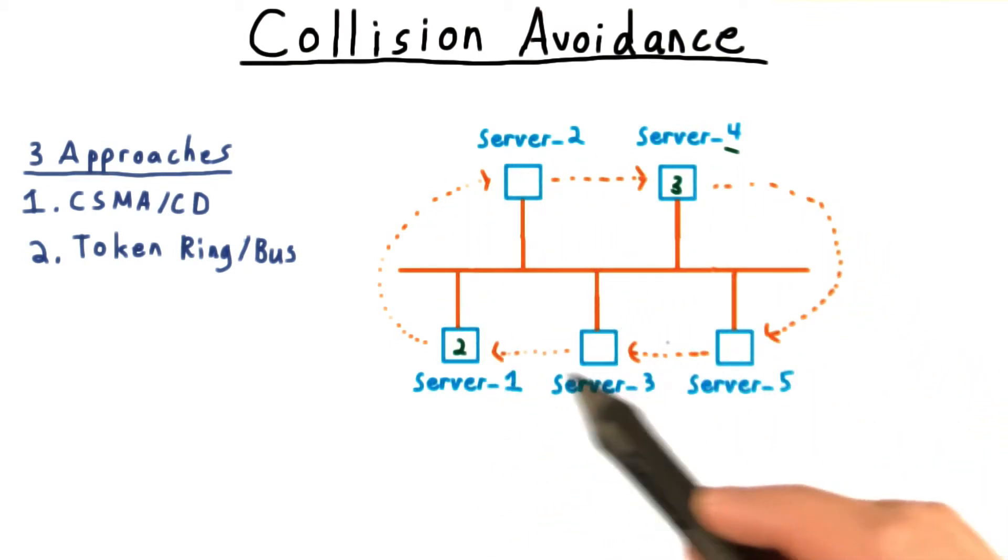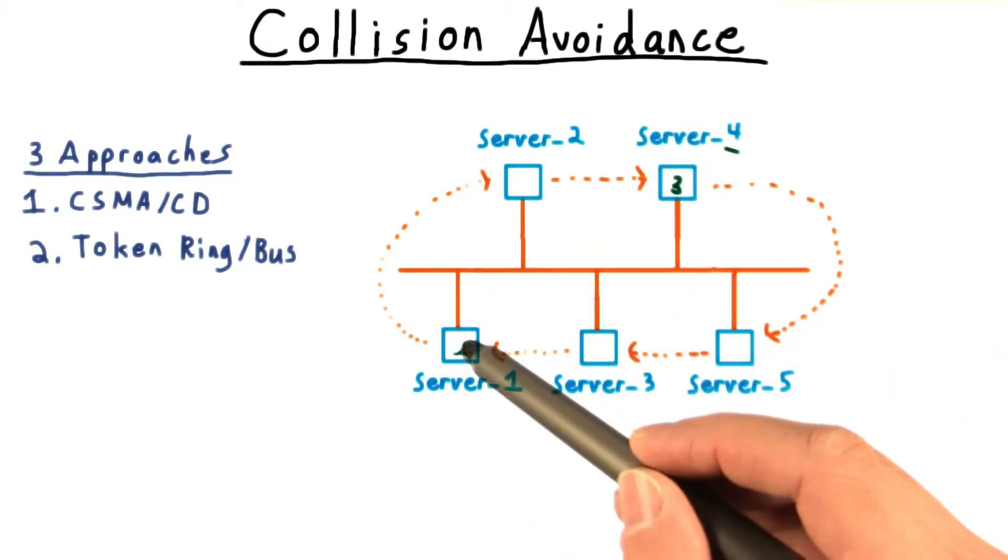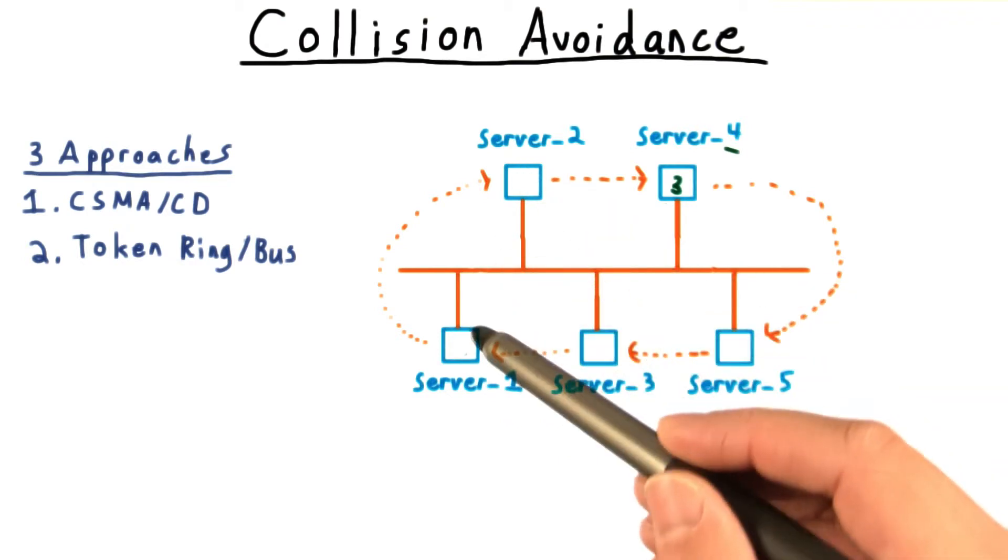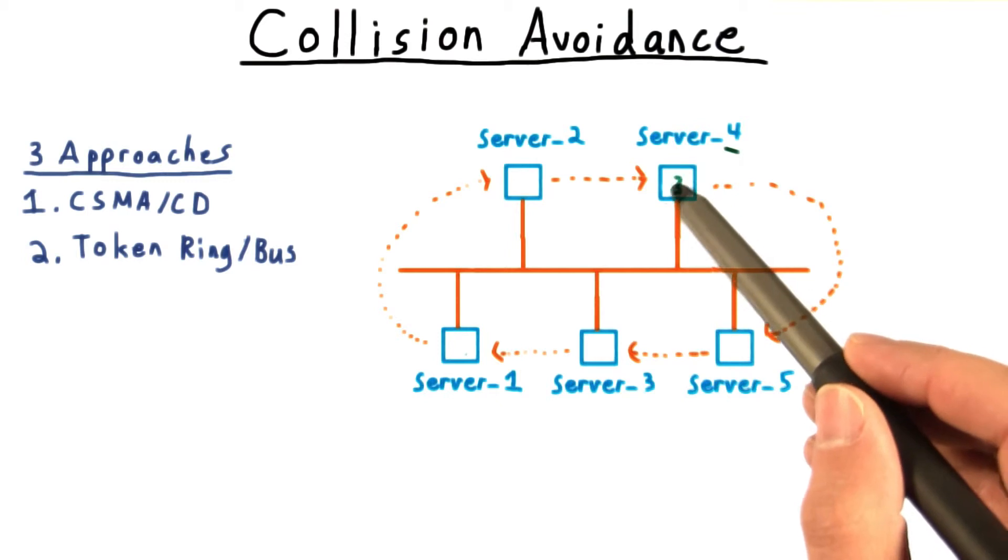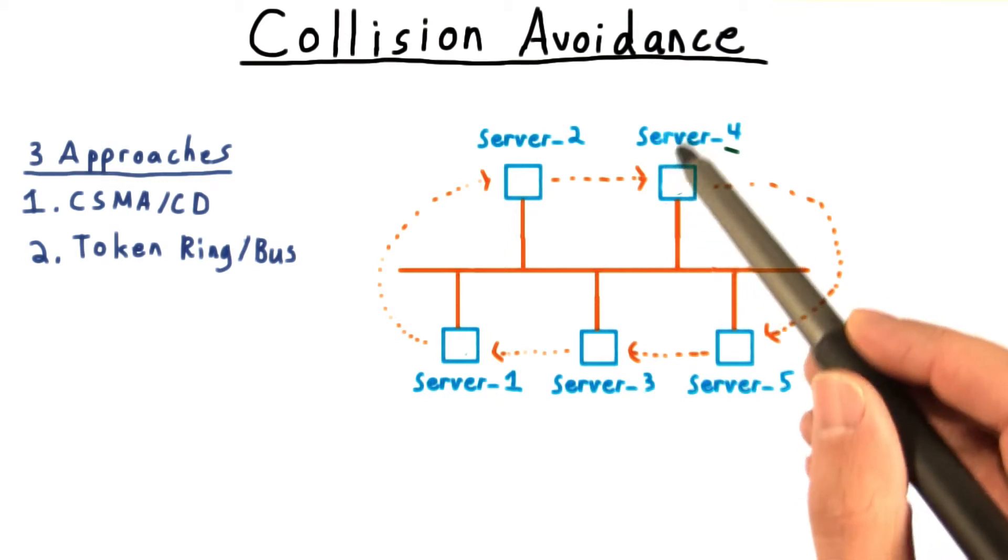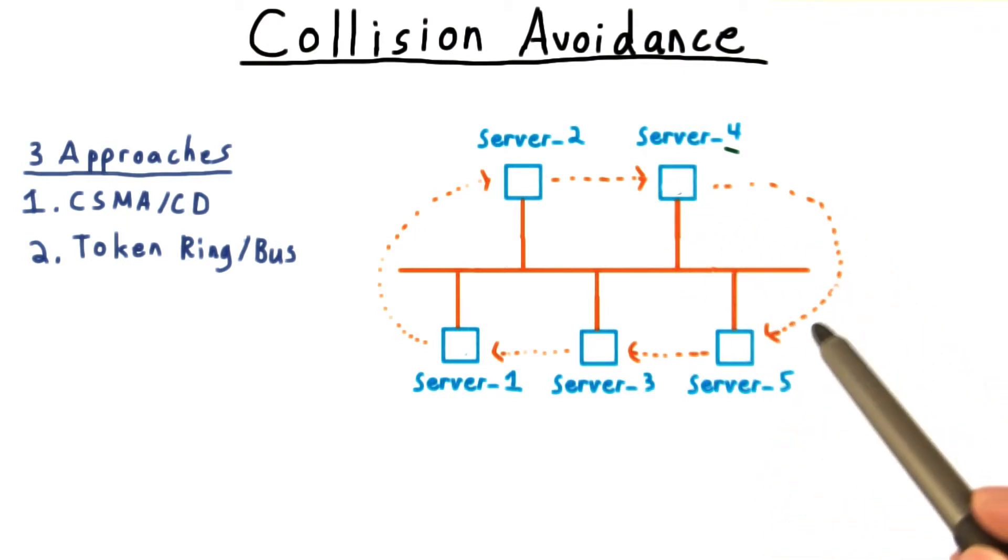If this node here wants to send a message, he waits for the token. Then sends out his message, and once he's received an acknowledgement, he then continues to pass the token on around. The next one, wanting to send a message, will grab the token, send out his message, wait for an acknowledgement, and then pass the token around some more.